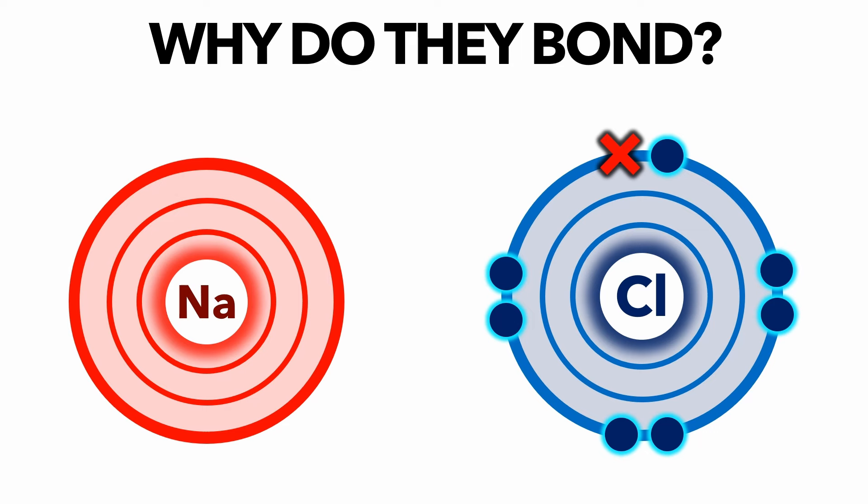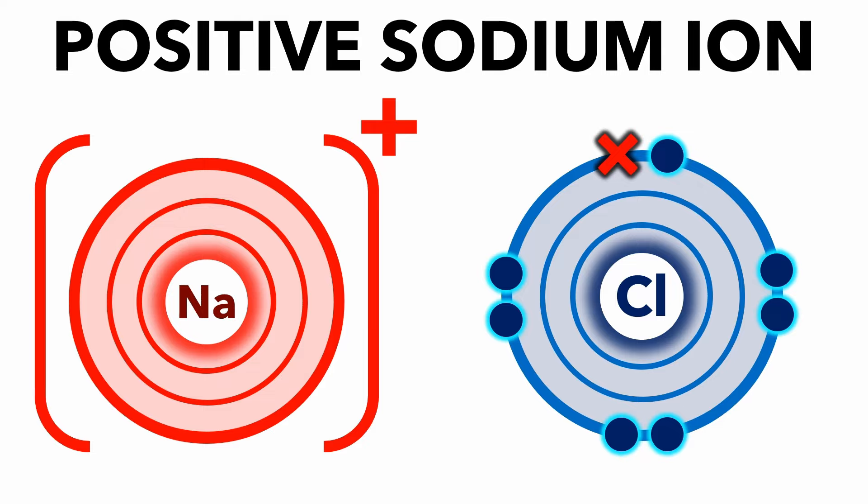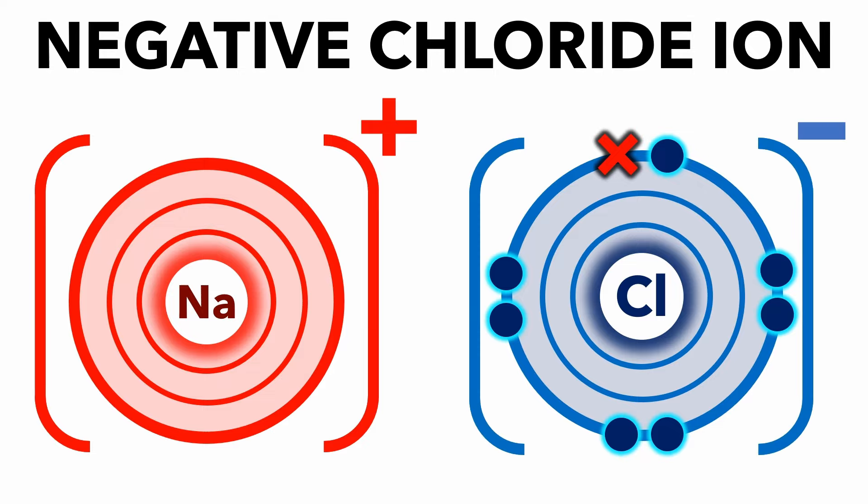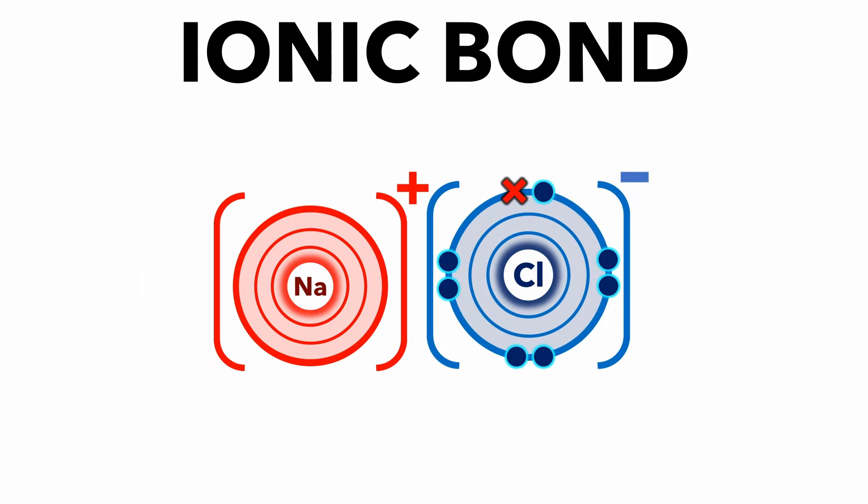But where does the ionic bond come from? Both atoms were neutral, but after trading the electron, the sodium is now a positive ion, and the chlorine is now a negative ion. The oppositely charged ions attract, causing the ionic bond.